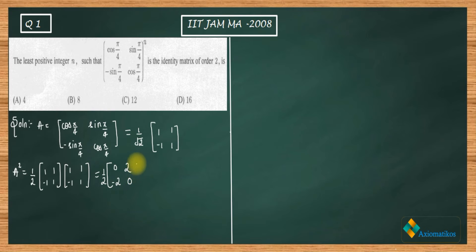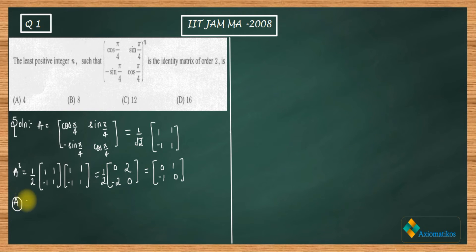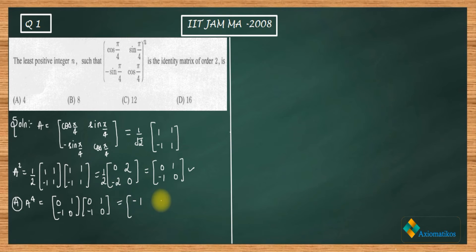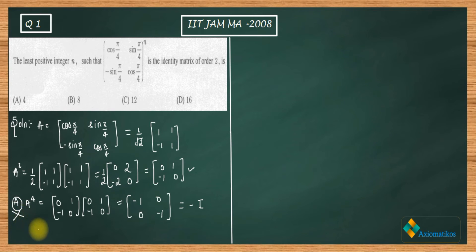Multiplying through by 1/2, the 2s cancel and A² = [0, 1; −1, 0]. Now compute A⁴ = A² · A²: [0, 1; −1, 0] · [0, 1; −1, 0]. The result is [−1, 0; 0, −1], which is minus the identity matrix. So A⁴ = −I, meaning option A (n = 4) is incorrect.